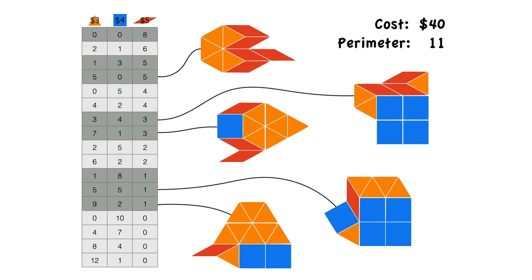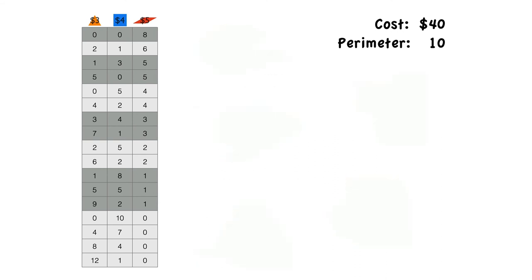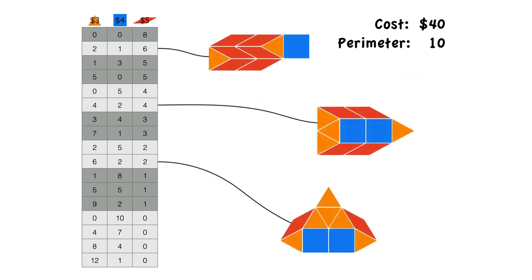Now of course there's probably many different ways to get these perimeters of 11. Like you can definitely move things around. Let's see the perimeter 10 ones. Here we go.